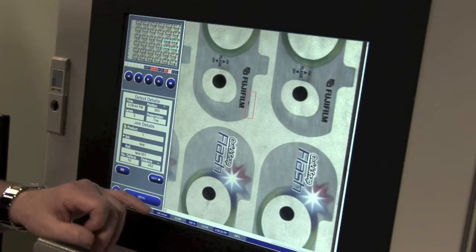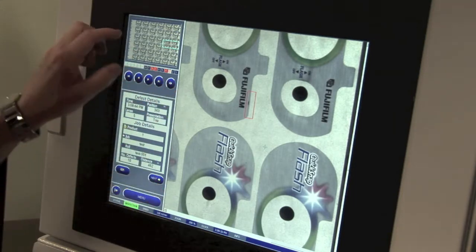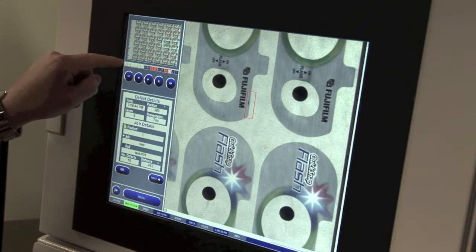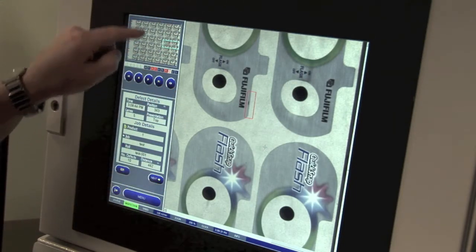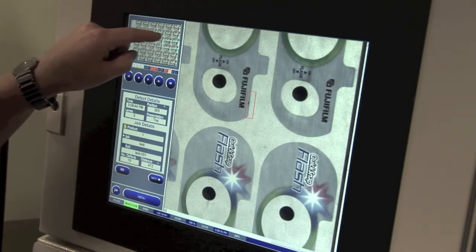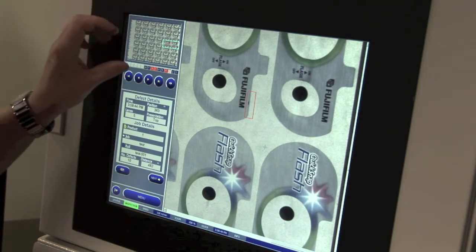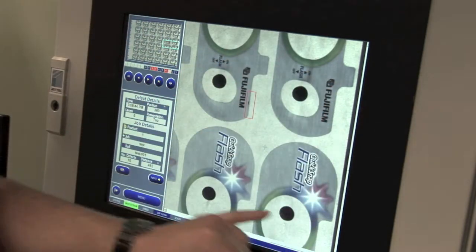When the inspection system detects a defect, the image will appear on the main view screen here. And in the global view screen, which shows us the full web width by one repeat length high, we've got this small little turquoise box which is showing you what part of the overall web is being displayed in the main view screen.